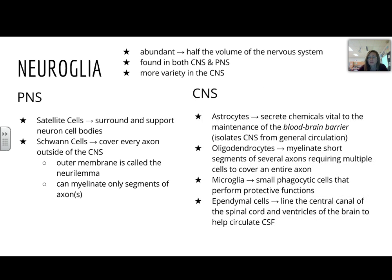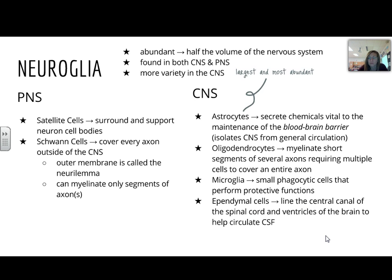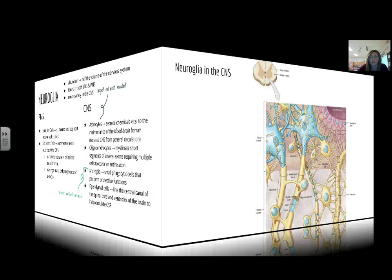There are four types of neuroglia in the central nervous system. Astrocytes secrete chemicals vital to the maintenance of the blood-brain barrier. Oligodendrocytes myelinate short segments of several axons. Microglia are small phagocytic cells that perform protective functions. And ependymal cells line the central canal of the spinal cord and help to circulate cerebrospinal fluid. The astrocytes are the largest and most abundant, while the microglia are the smallest and least numerous of the neuroglia.